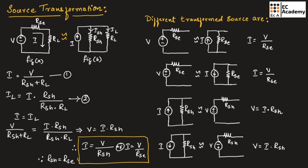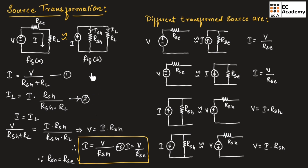So whenever we are replacing a voltage source with a current source, we need to connect the resistor in parallel with the current source. When we are replacing a current source with a voltage source, the resistor should be connected in series, as shown in this figure.